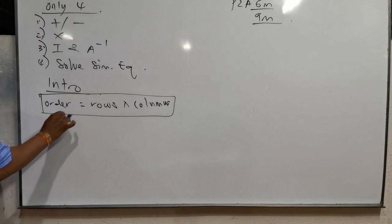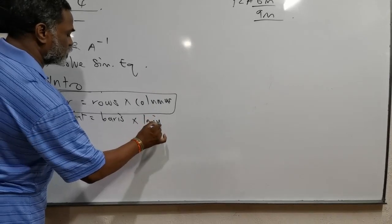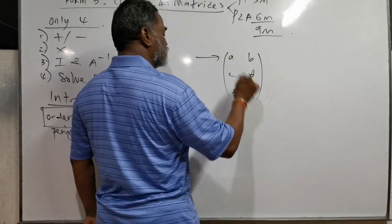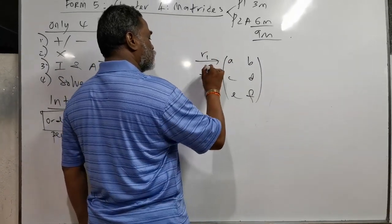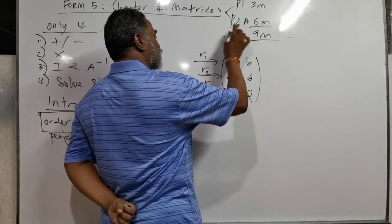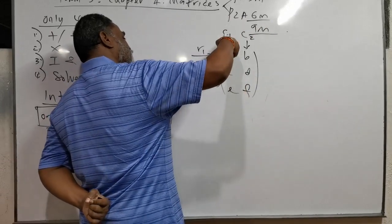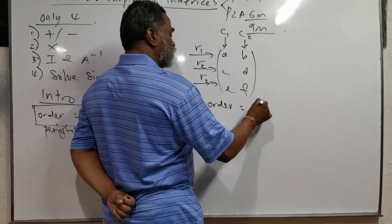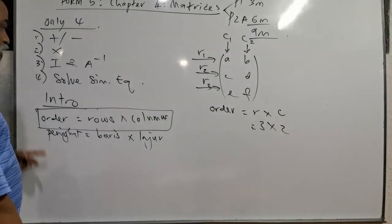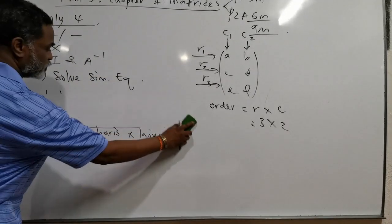In Malay you call it 'peringkat'. Peringkat adalah baris darab lajur. For example, if I give you a matrix with elements A, B, C, D, E, F — this has row 1, row 2, row 3 (baris 1, baris 2, baris 3) and column 1, column 2 (lajur 1, lajur 2). So the order is 3 rows times 2 columns, written as 3 × 2.